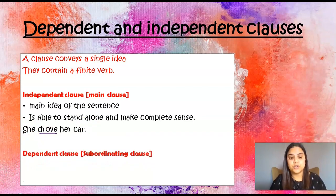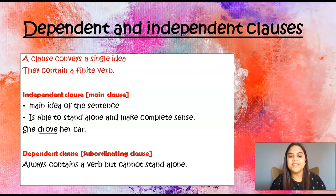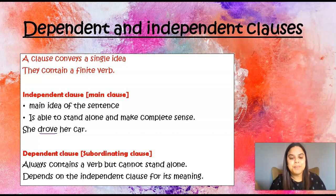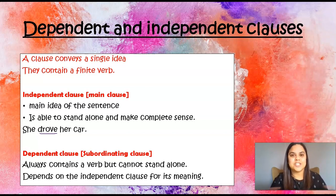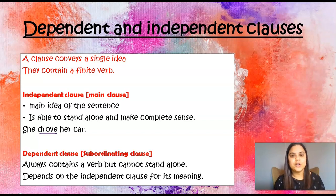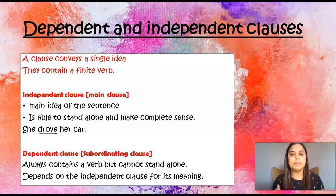A dependent clause is also known as a subordinating clause. It always contains a verb but cannot stand on its own. It depends on the independent clause for its meaning — without the independent clause, the dependent clause does not make sense. So the independent clause can stand on its own, like 'She drove her car,' but the dependent clause cannot stand on its own and will need extra help from the independent clause to make sense.